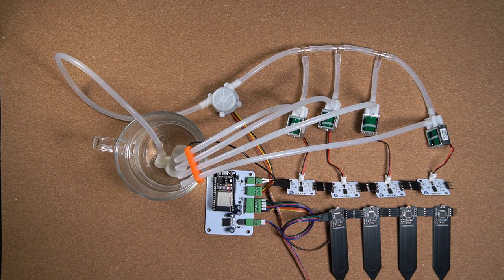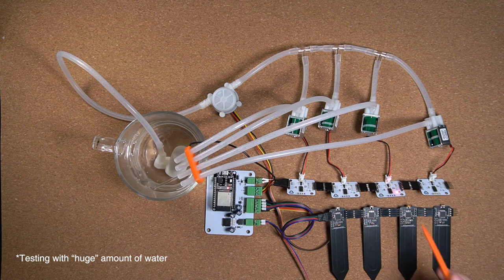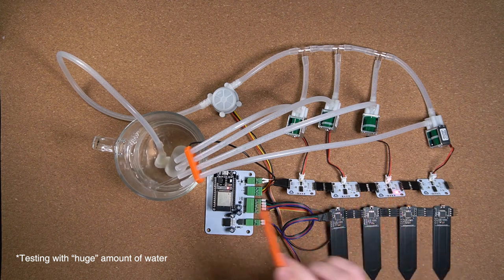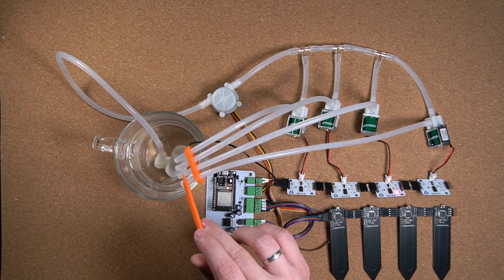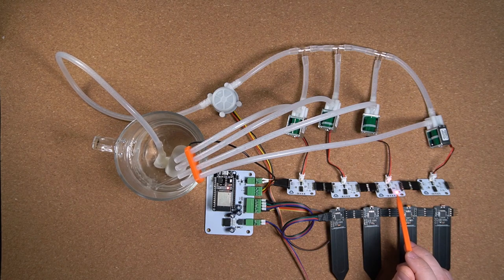We just specify which plant and how much water we want and the central unit does the rest. This allows us to water each individual plant with precise amount of water and also as often as we please or as the plant needs it.